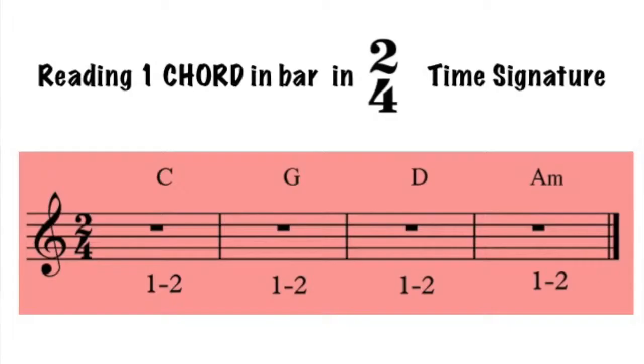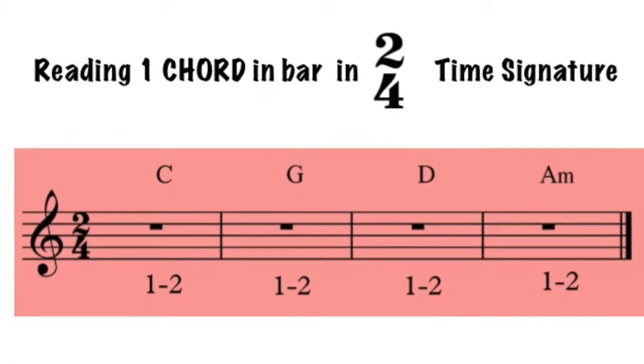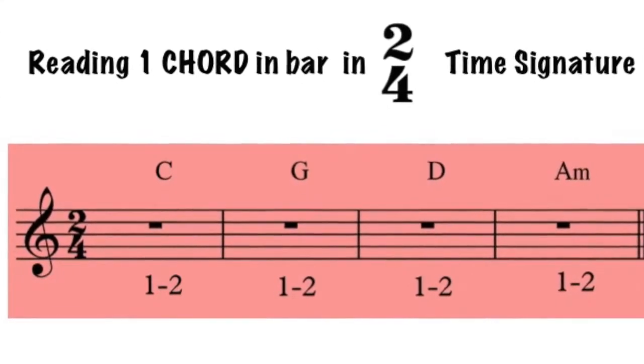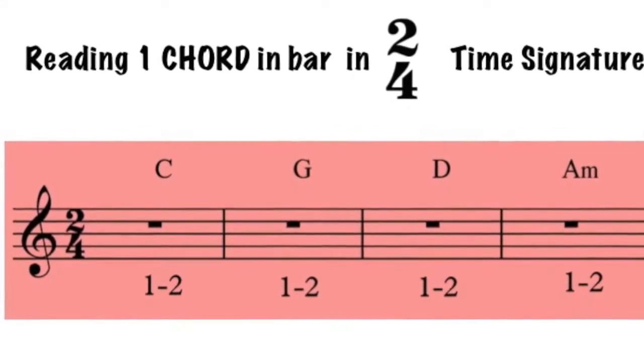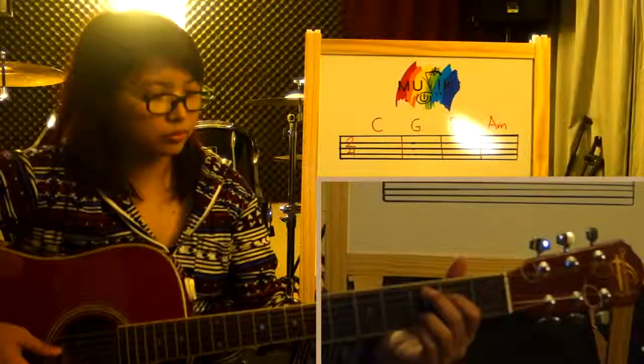Let us take a look at how the details mentioned above get us to reading chord charts. The example shows having one chord in every bar. Play each chord within the duration of two counts.